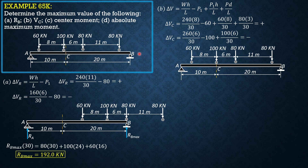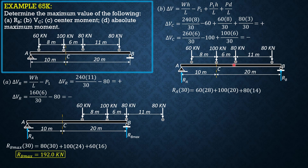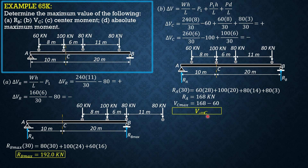The shear at C is RA minus 60, considering forces to the left. Summing moments about B equal to zero: RA times 30 equals 60 times 28, plus 100 times 20, plus 80 times 14, plus 80 times 3 (since 14 minus 11 is 3). So RA is 168 kN. Therefore the maximum shear at C is 168 minus 60, which equals 108 kN.